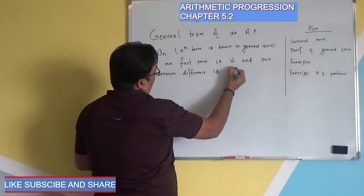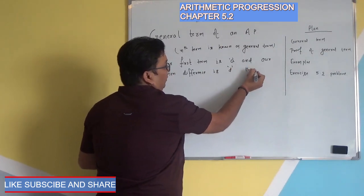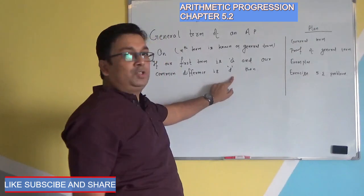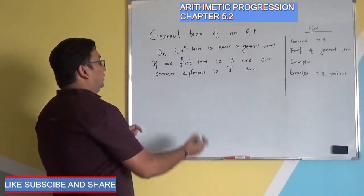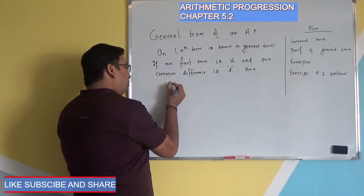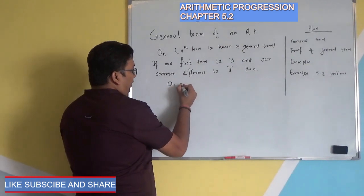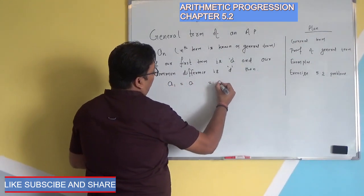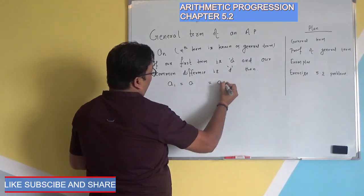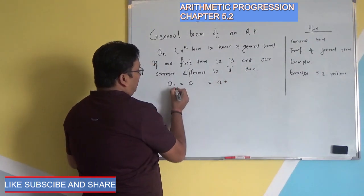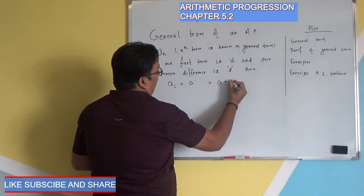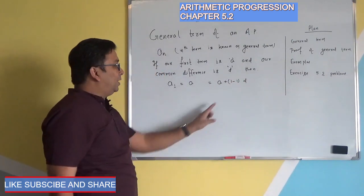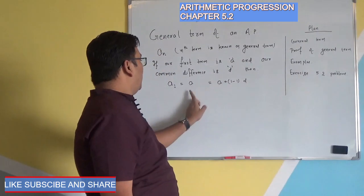Suppose our first term is a and our common difference is d. Then if our first term is a and common difference is d, we can write the first term as a₁. In generalized form, we can write this as a plus 1 minus 1 into d. Since 1 minus 1 is 0, this is equal to a.